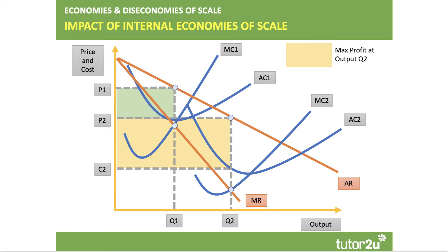You can also show economies of scale in terms of moving from one short run to another — from MC1/AC1 representing a small-scale plant to a much bigger operation, MC2/AC2. You can include the envelope long-run average cost curve as well. If scale economies are sufficiently large, the profit-maximising profit at output Q2 is much higher than at Q1 — the yellow area bigger than the green area — and consumers benefit too because prices come down.